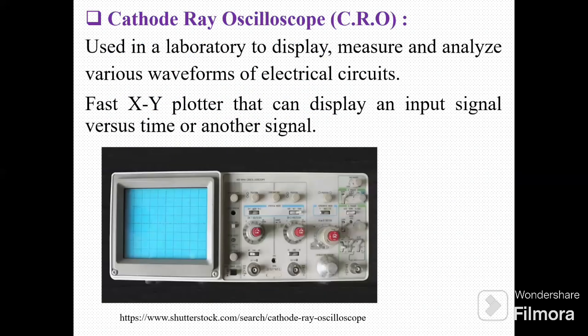Now friends, see this image. This is an image of the Cathode Ray Oscilloscope, CRO. This instrument is used in a laboratory to display, measure, and analyze various waveforms of electrical circuits. Here, a fast XY plotter can display an input signal versus time or another signal.